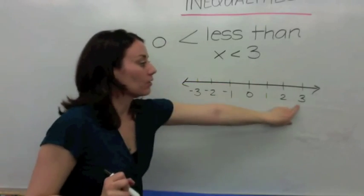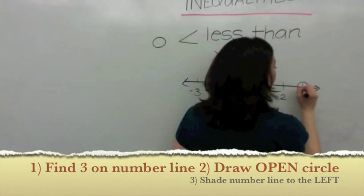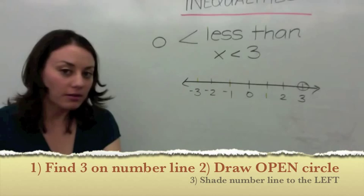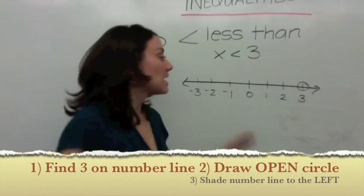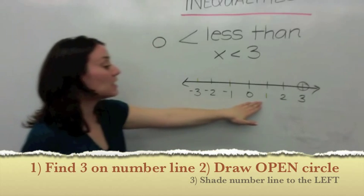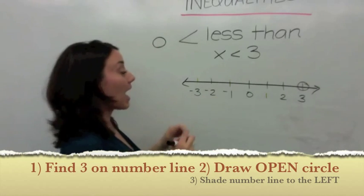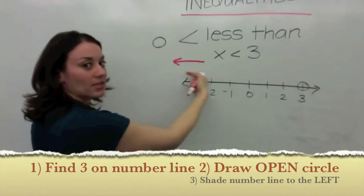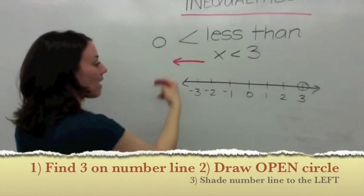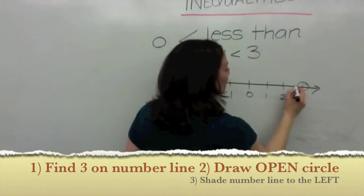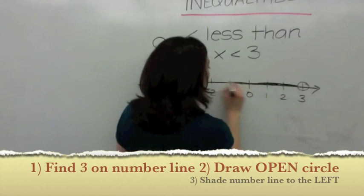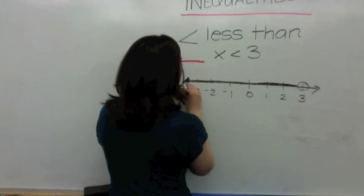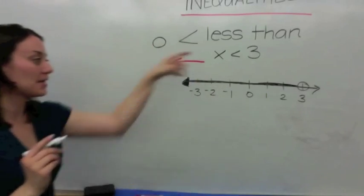Find 3 and draw an open circle. Is 2 less than 3? Yes. Is 1 less than 3? Is 0 less than 3? Yes — all of these values to the left. And look: the less than symbol actually points to the left. Everything that points to the left is less than 3, so you fill in the whole number line to the left. Every number to the left of 3 makes this statement true.